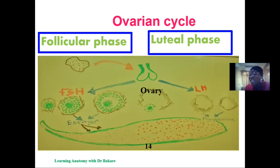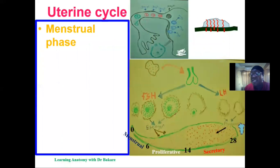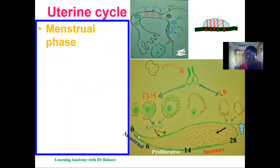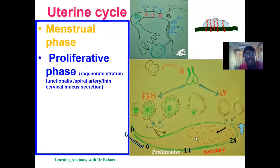The follicular phase covers the period from initiation of follicular growth up to ovulation, while after ovulation we have the luteal phase — the development of the corpus luteum. In the uterine cycle, concurrent events occur that include the menstrual phase, during which the endometrium is shed. The endometrium is at its thinnest during this phase, specifically through the shedding of the stratum functionalis.